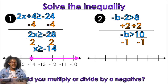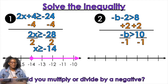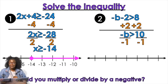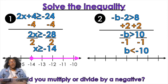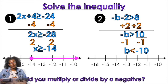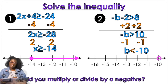Do we divide by -1 on one side or both sides? Both sides. And when we multiply or divide by a negative on both sides, what happens? We flip our symbol. So it was greater than, and now it's going to be less than. On the number line: open circle or closed circle? Open. Left or right? Left.